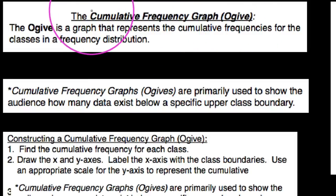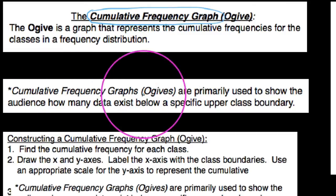So whenever anybody says ogive, you can substitute cumulative frequency graph in that sentence. When we say an ogive, we are primarily using this to show the audience how many data exist below a specific upper class boundary.